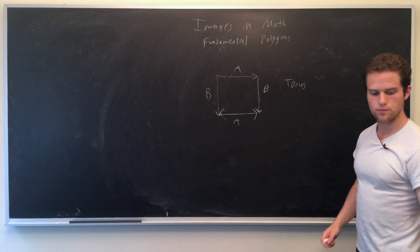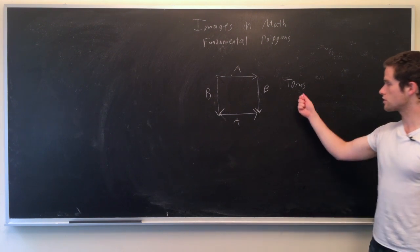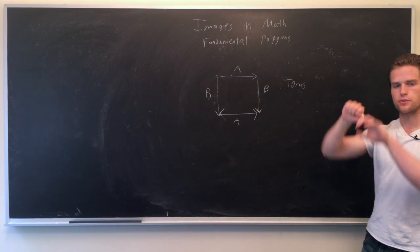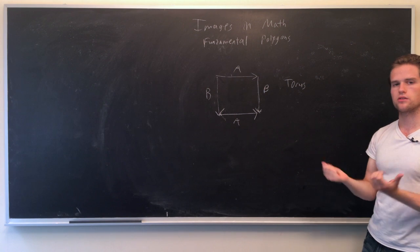So lastly, a bit of a simpler image, it's a torus. So here we have, we bring two sides together, then we just connect those two sides, and that gives us like a donut shape.